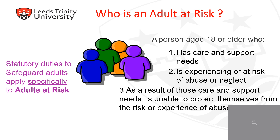Who is an adult at risk? We are aware that all children are at risk of being harmed, and therefore all children must be safeguarded. However, when speaking about adults, the question arises as to who is a vulnerable adult. An adult who is at a statutory requirement to be safeguarded is defined as someone who is 18 years or over, who has care or support needs, or is experiencing or has experienced abuse, harm or neglect. Therefore, it is a statutory requirement to safeguard these particular individuals.